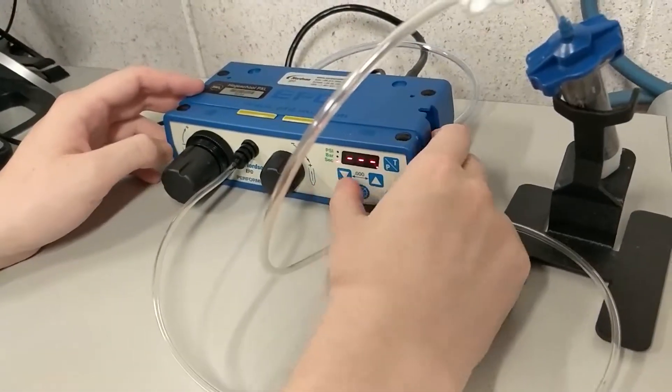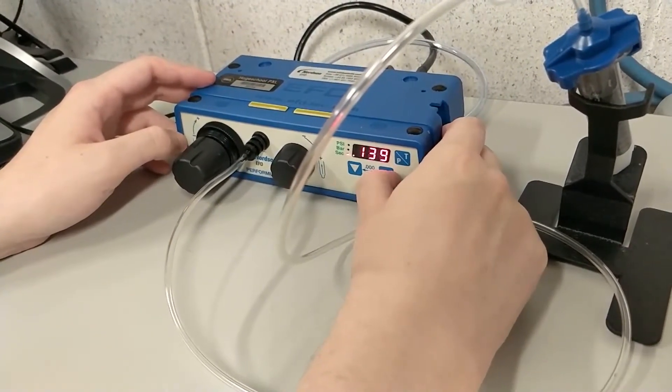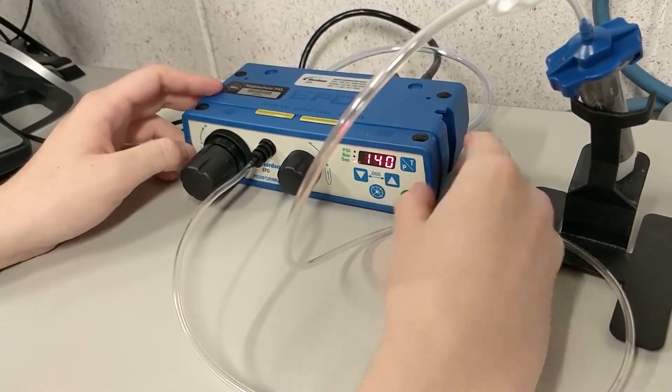After that, you can use the PT button again to navigate to the second setting and set the dispensing time using the arrow keys. You can skip this setting if you want to dispense in free mode.